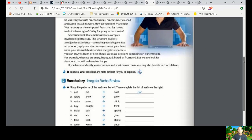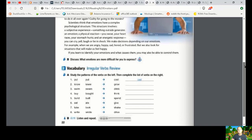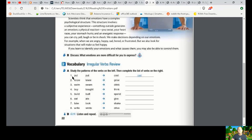Part number two says vocabulary, irregular verb review. Study the patterns of the verb on the left. Then complete the list of verbs on the right. Number one: put, put, cost, cost. Know, knew, grow, grew. So you're going to write grow with an E like this one. It'll be grew.